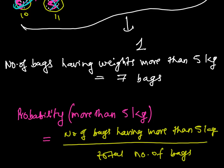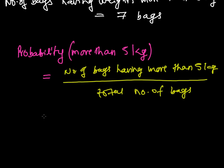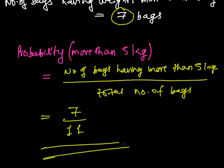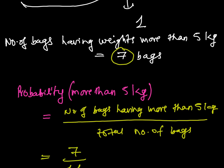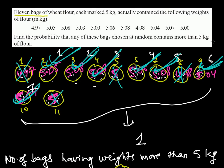So the total number of bags having more than 5 kg is 7, and the total number of bags is 11. Therefore the probability of selecting a bag with weight more than 5 kg is 7 upon 11.